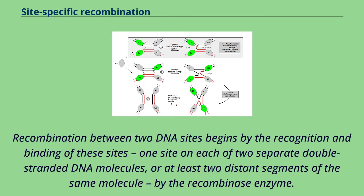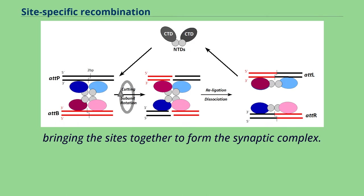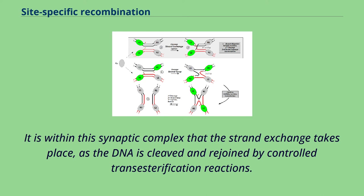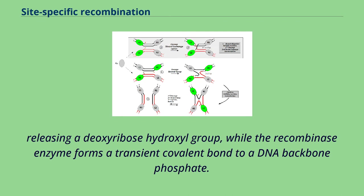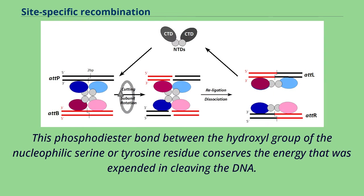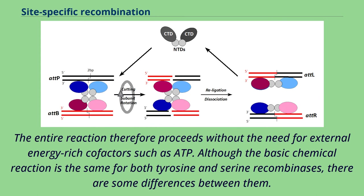Recombination between two DNA sites begins by the recognition and binding of these sites — one site on each of two separate double-stranded DNA molecules, or at least two distant segments of the same molecule — by the recombinase enzyme. This is followed by synapsis, i.e., bringing the sites together to form the synaptic complex. It is within this synaptic complex that the strand exchange takes place, as the DNA is cleaved and rejoined by controlled transesterification reactions. During strand exchange, each double-stranded DNA molecule is cut at a fixed point within the crossover region of the recognition site, releasing a deoxyribose hydroxyl group, while the recombinase enzyme forms a transient covalent bond to a DNA backbone phosphate. This phosphodiester bond between the hydroxyl group of the nucleophilic serine or tyrosine residue conserves the energy that was expended in cleaving the DNA. Energy stored in this bond is subsequently used for the rejoining of the DNA to the corresponding deoxyribose hydroxyl group on the other DNA molecule. The entire reaction therefore proceeds without the need for external energy-rich cofactors such as ATP.